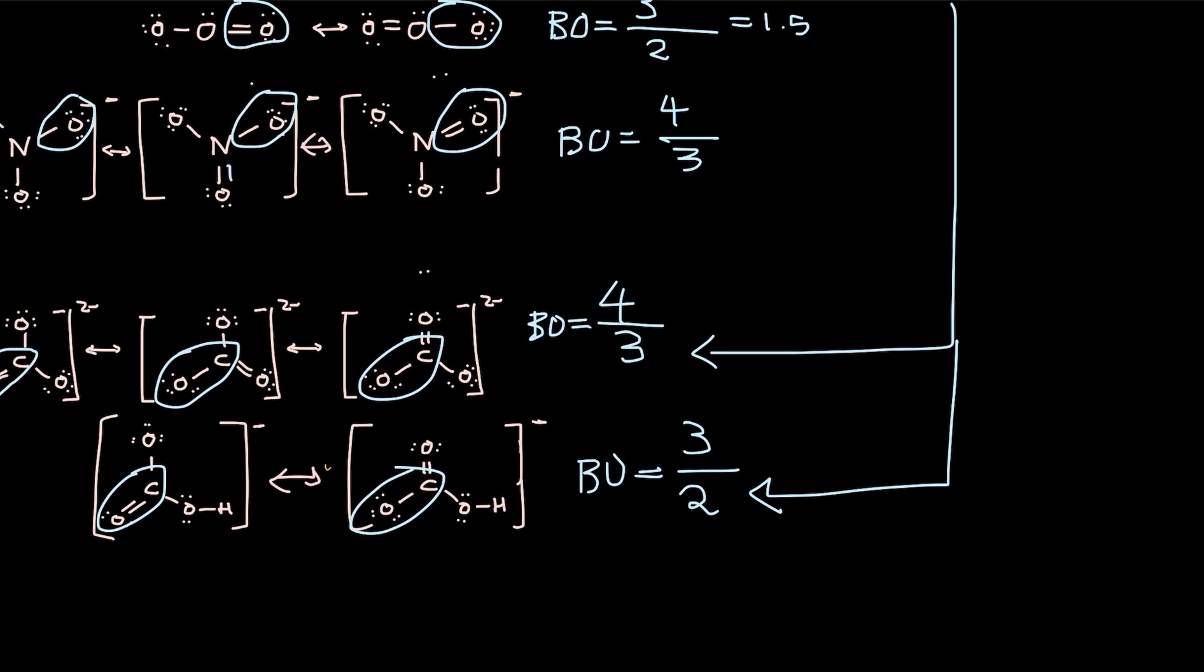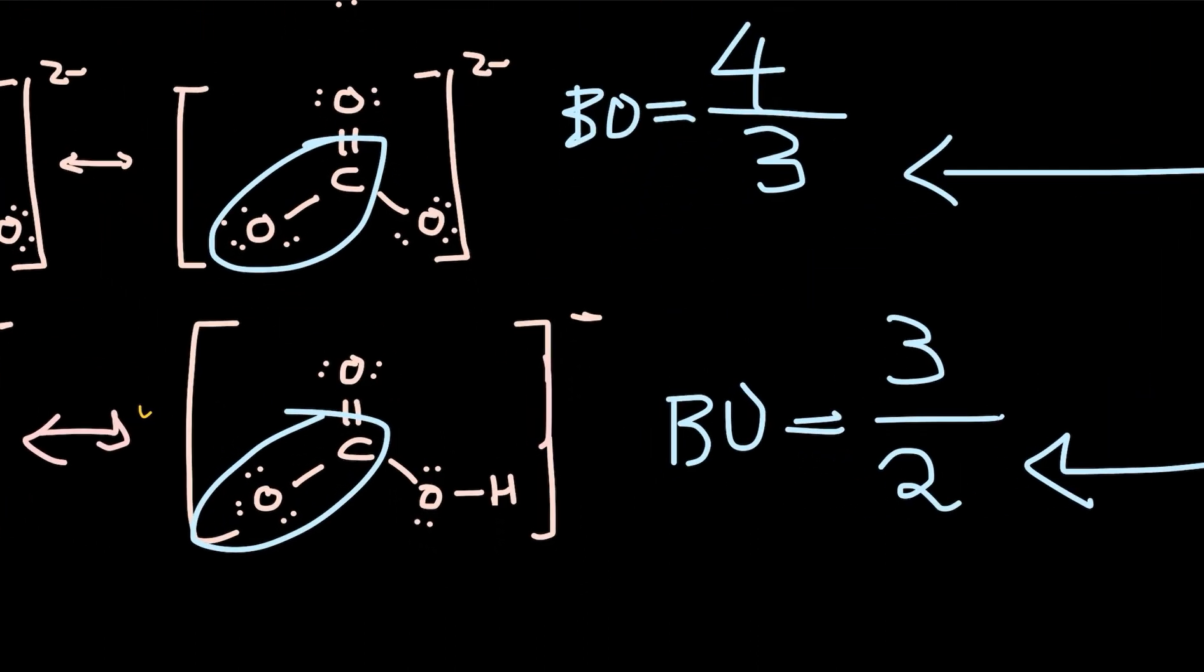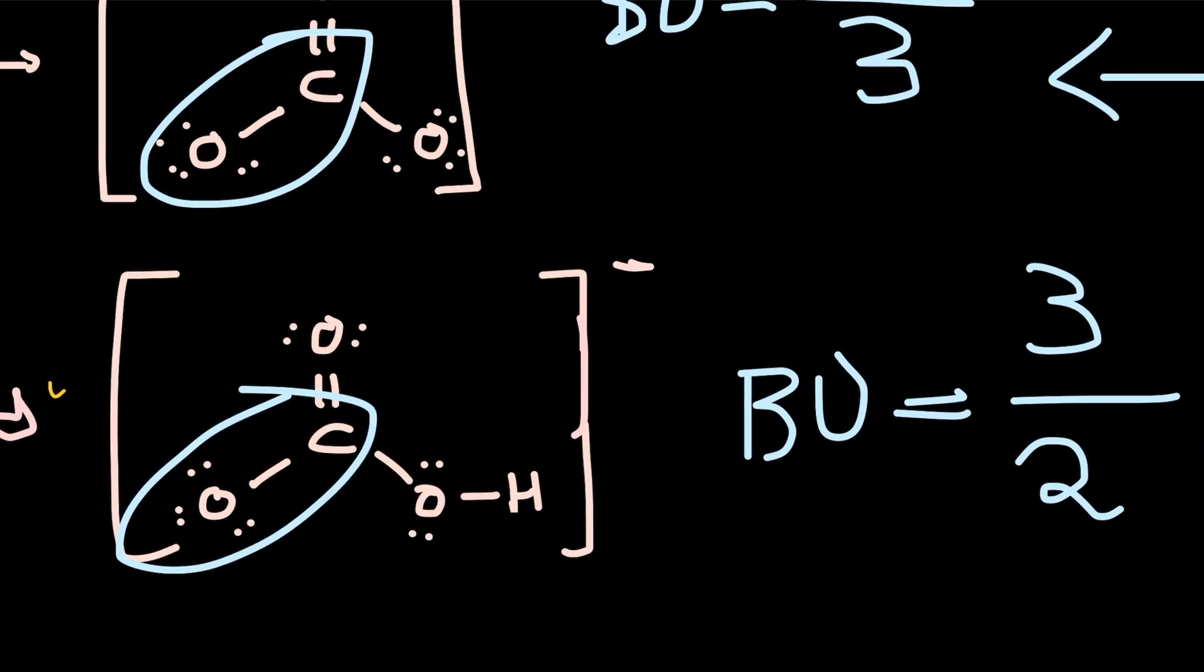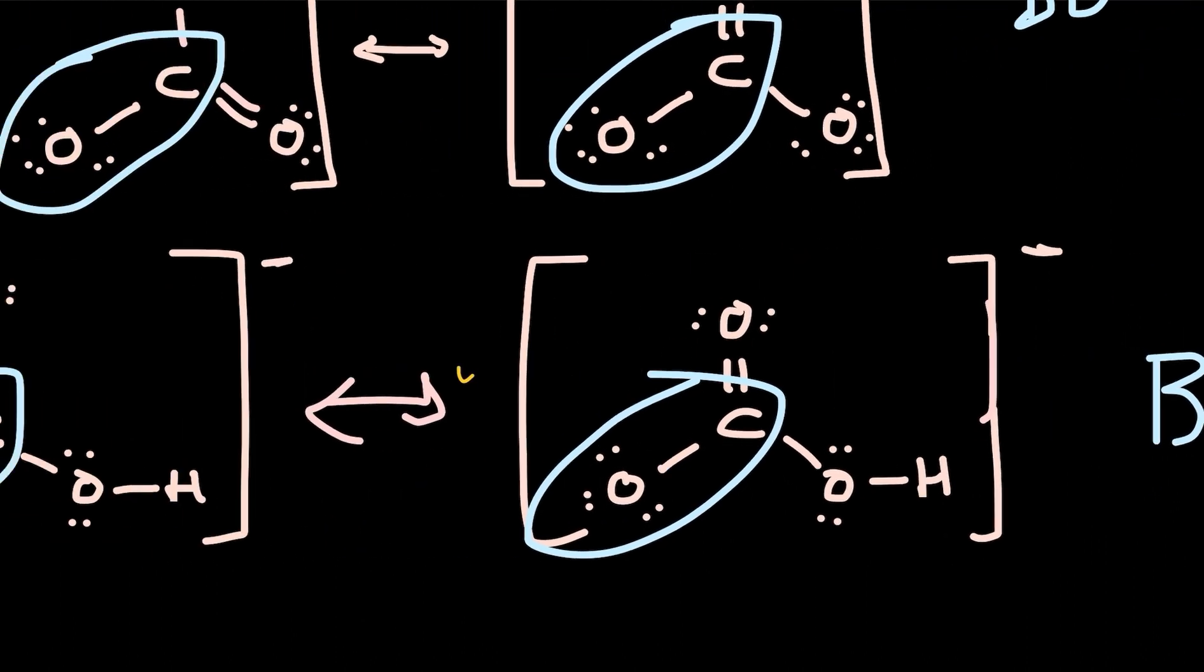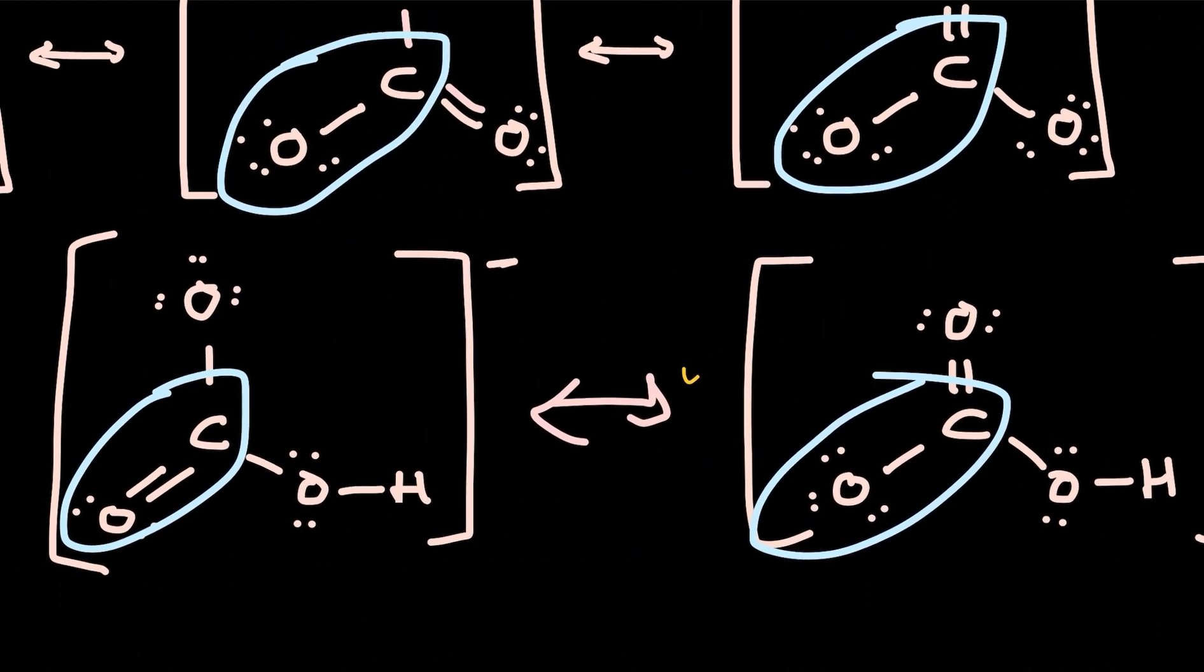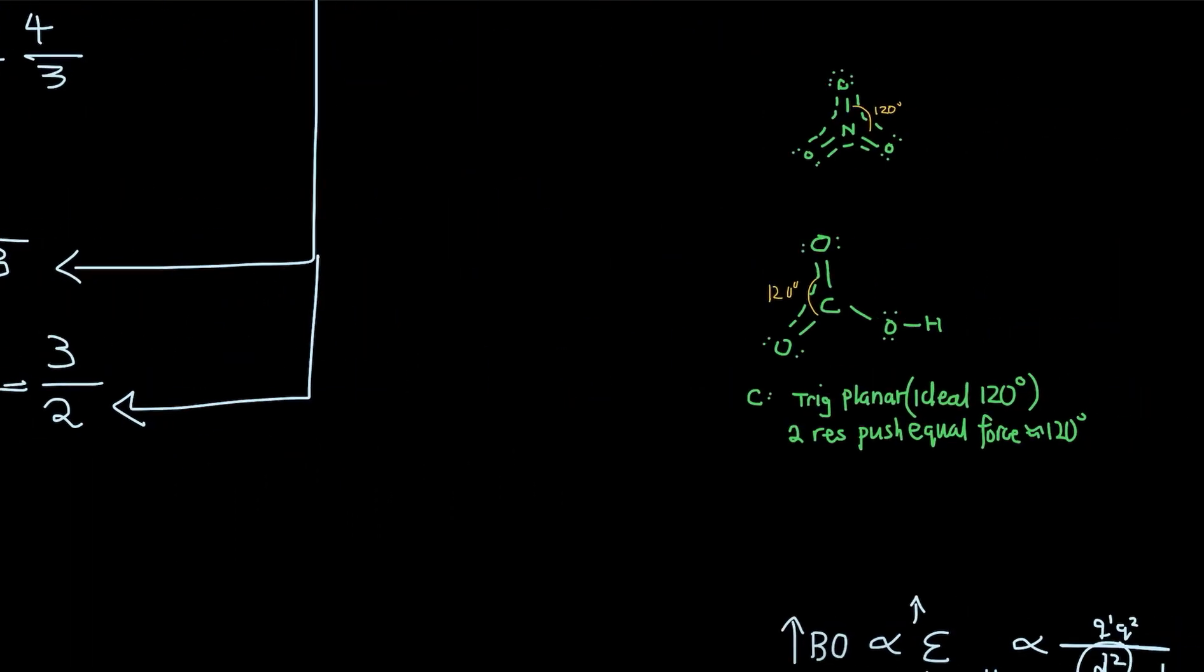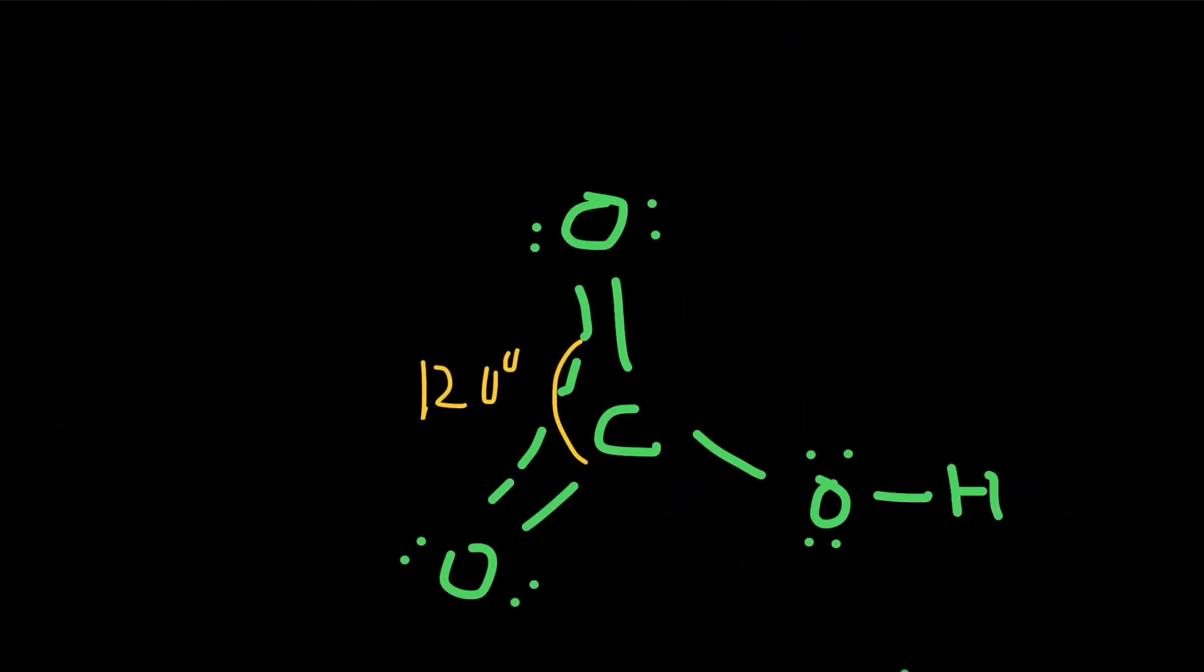Now what about this last example here? What would be the bond angles? So in this example, if we did not know there were a resonance structure, we might say, well, it looks like there's a planar shape and this part might be greater than 120, but we have two resonance structures, which means the diagram looks like this, where electron is delocalized over these two oxygen atoms.